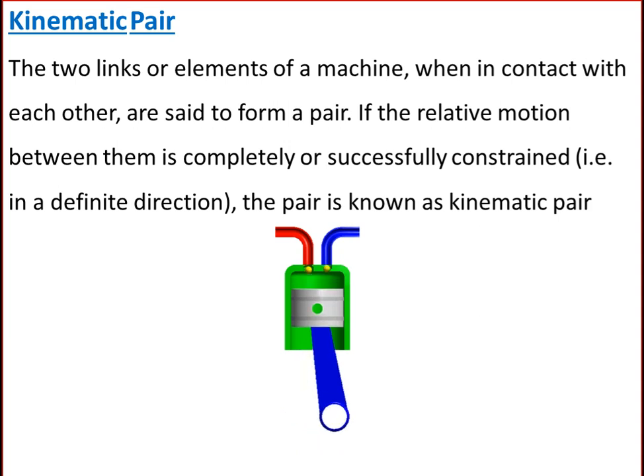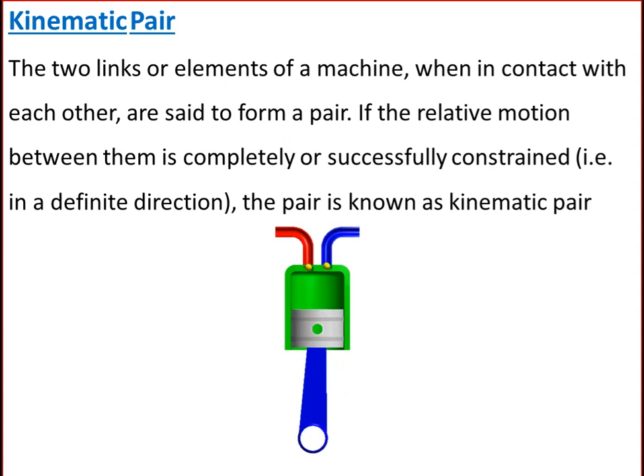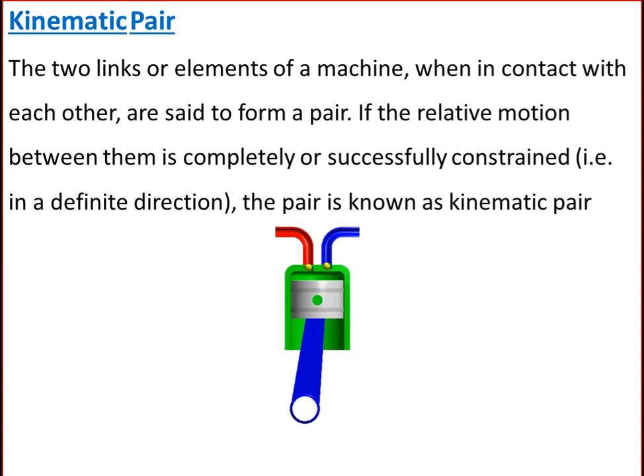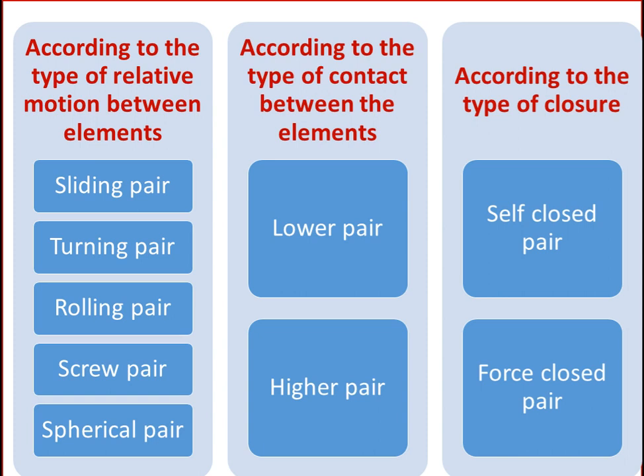The next concept is kinematic pair. When two links or elements of a machine are in contact with each other and the relative motion between them is completely or successfully constrained in a definite direction, the pair is known as a kinematic pair. Kinematic pairs may be classified according to: the type of relative motion between elements (sliding, turning, rolling, screw, and spherical pair); the type of contact (lower pair or higher pair); and the type of closure (self-closed pair or force-closed pair).